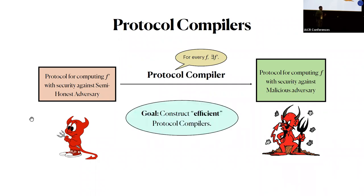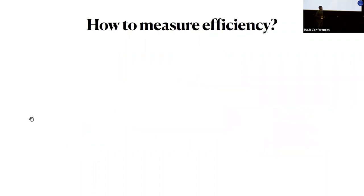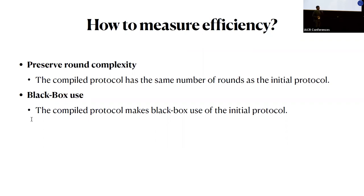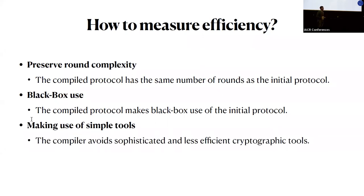We are interested in constructing an efficient protocol compiler, optimizing three main parameters. First, preserve round complexity — the compiled protocol must have the same number of rounds as the initial protocol, adding no additional rounds for malicious security. Second, black box use — the compiled protocol makes black box use of the initial protocol, using its algorithms as oracles: giving inputs, getting outputs, but otherwise agnostic to its implementation. Finally, we want the compiler to use simple cryptographic tools and avoid sophisticated and less efficient primitives.